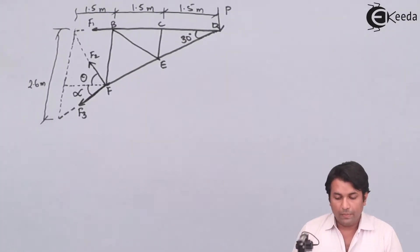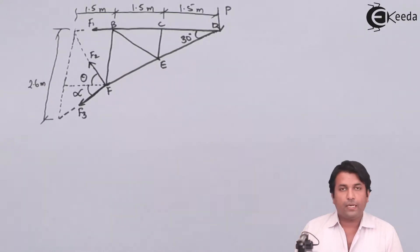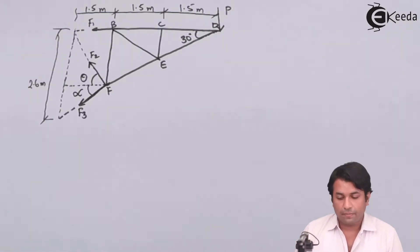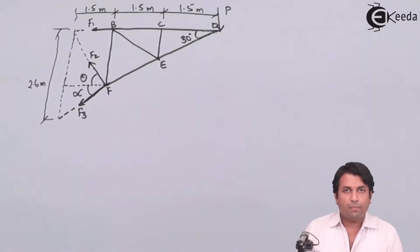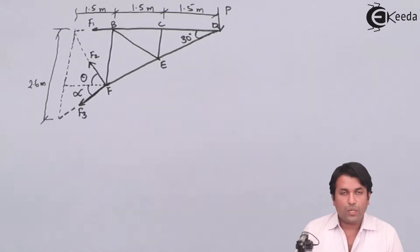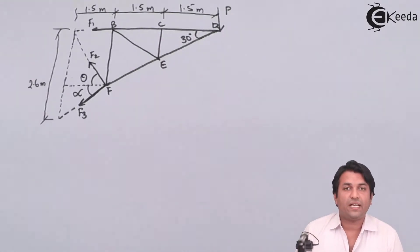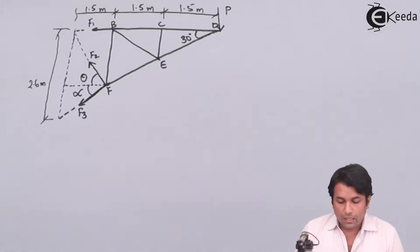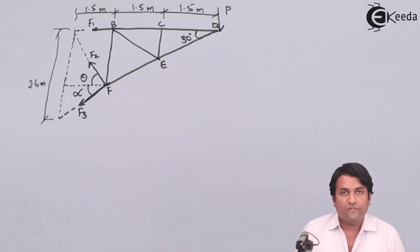I will be taking moment about point F — that will be my first step. If I take moment about point F in the method of sections, the forces F2 and F3 are not going to create any moment in this step, so I can find out the force F1 easily.